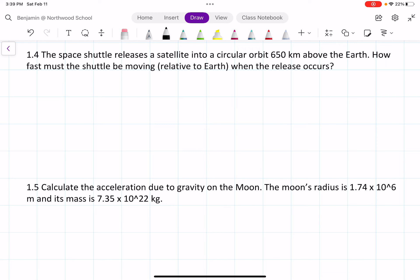Alright, so we can figure out the radius we need, which is the height of the satellite plus the radius of the Earth. So we have r equals 650 plus 6380, which is 7030 kilometers.